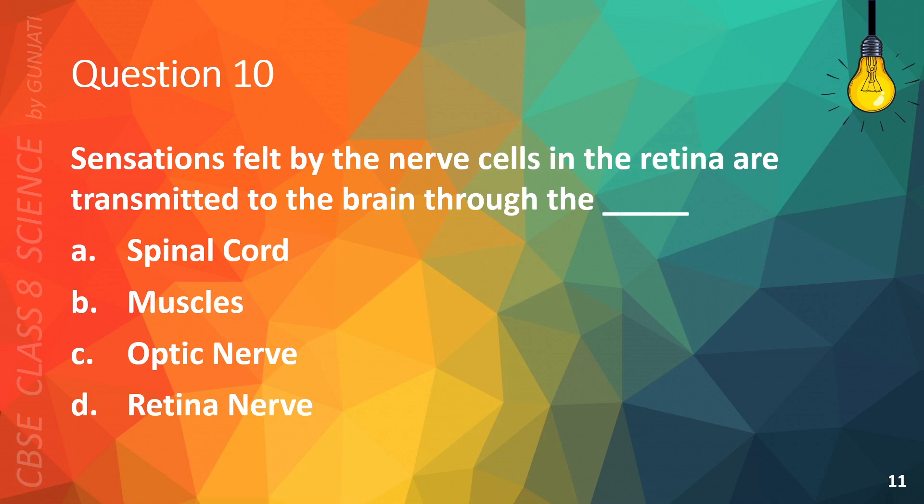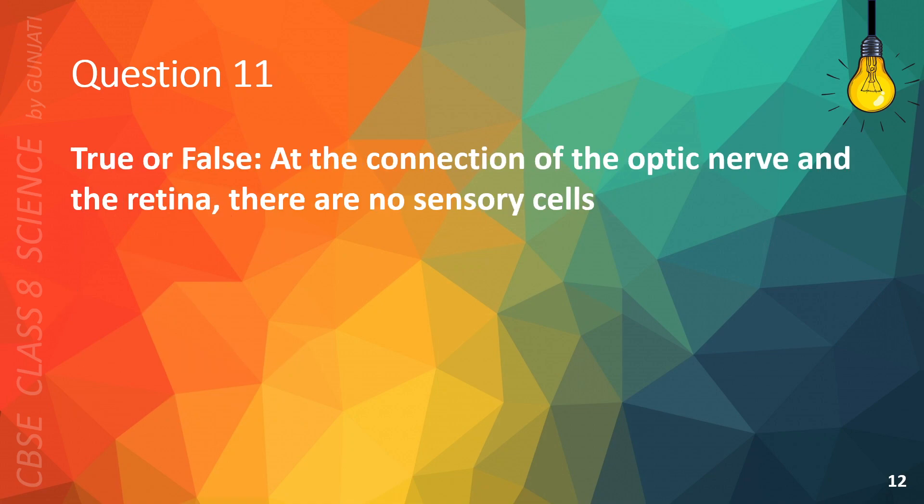The correct answer is C, optic nerve. Question 11. True or false: At the connection of the optic nerve and the retina there are no sensory cells. The correct answer is true.